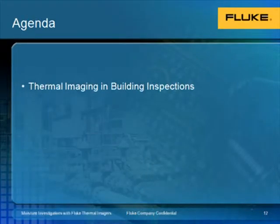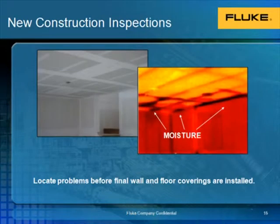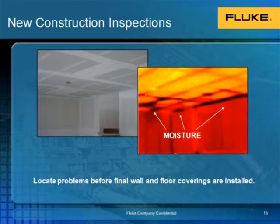Now that we understand how the technology works, let's take a look at some of the common issues you'll likely come across when performing a building inspection. Here we see an example of where thermal imaging can be used in new construction. In the ceiling we see several areas where moisture is hiding. If the moisture is not allowed to dry before coverings are applied, there can be major issues down the road, including mold.